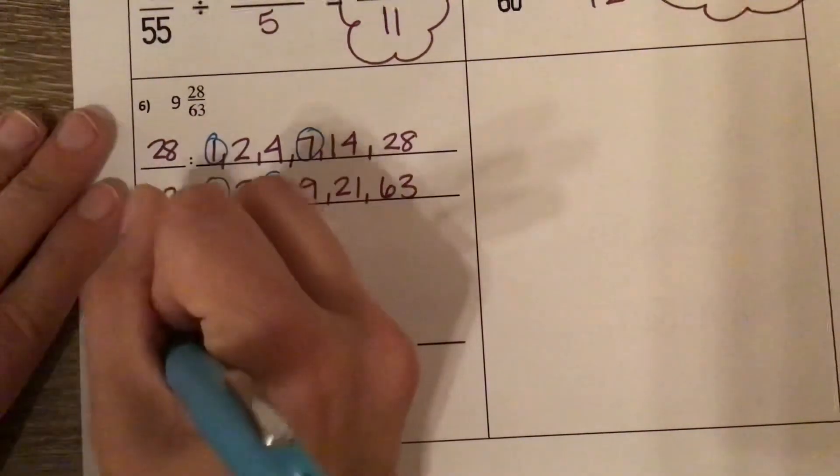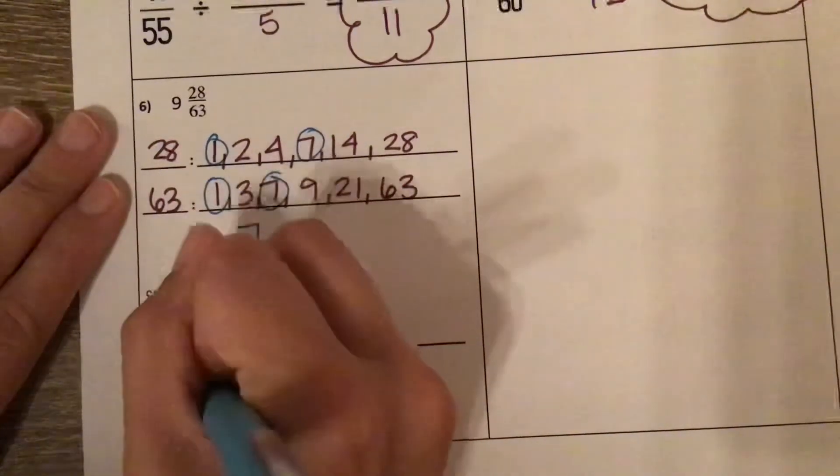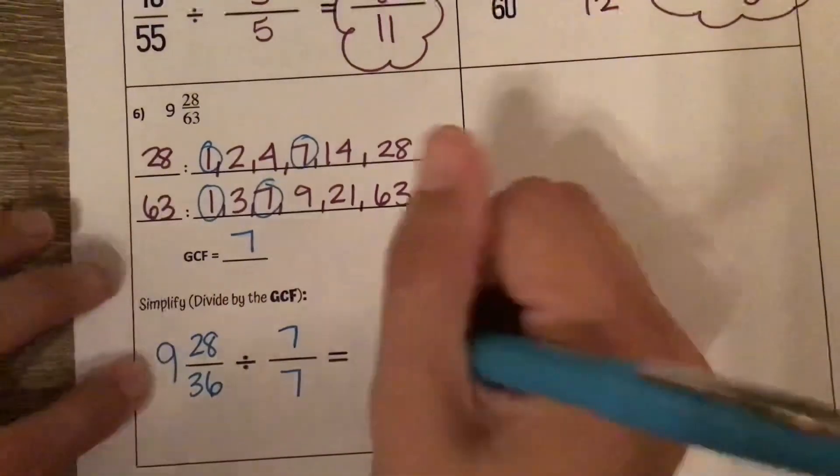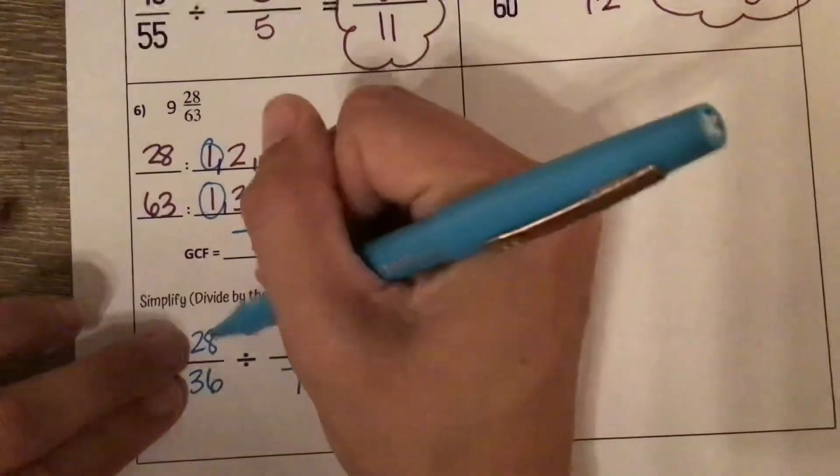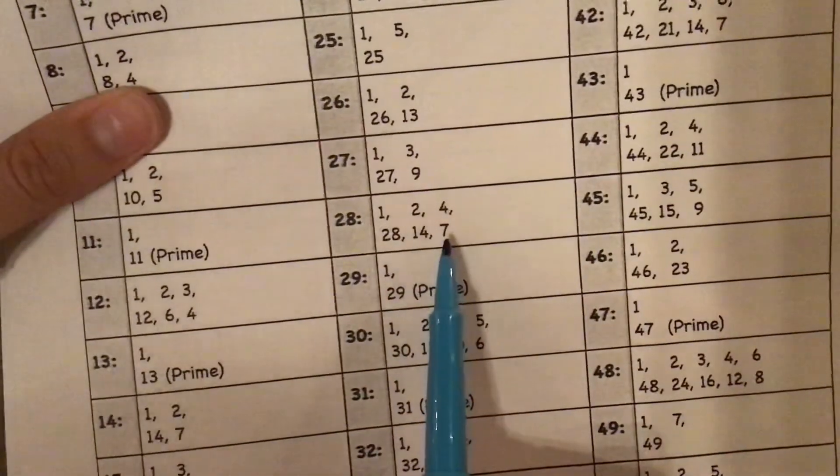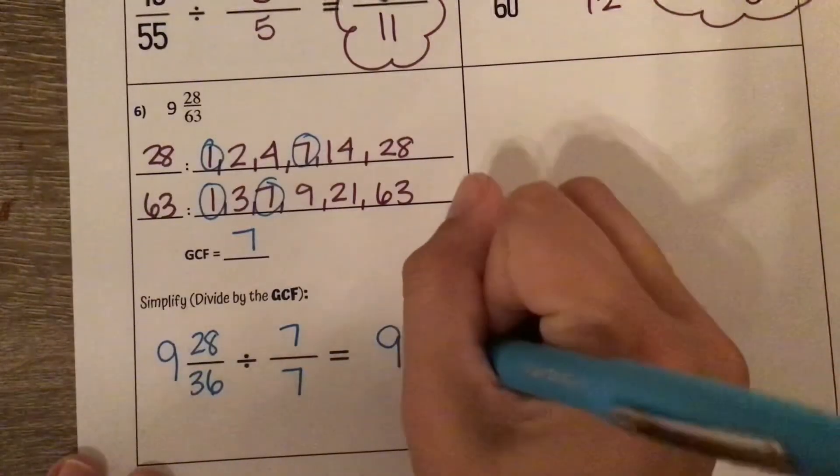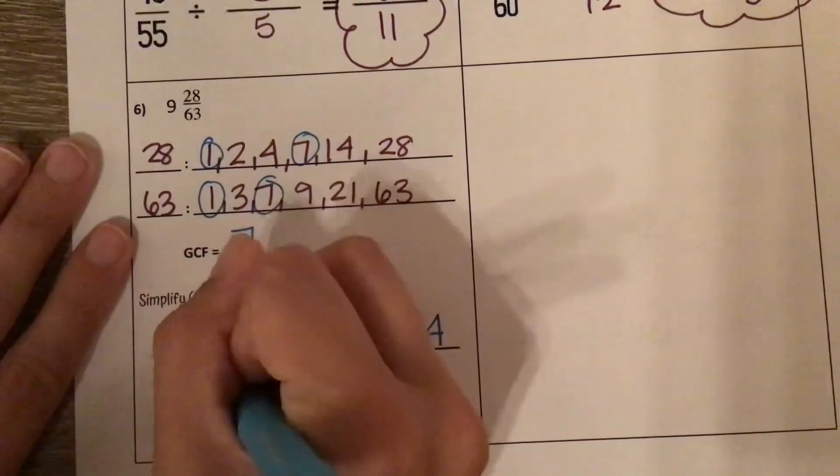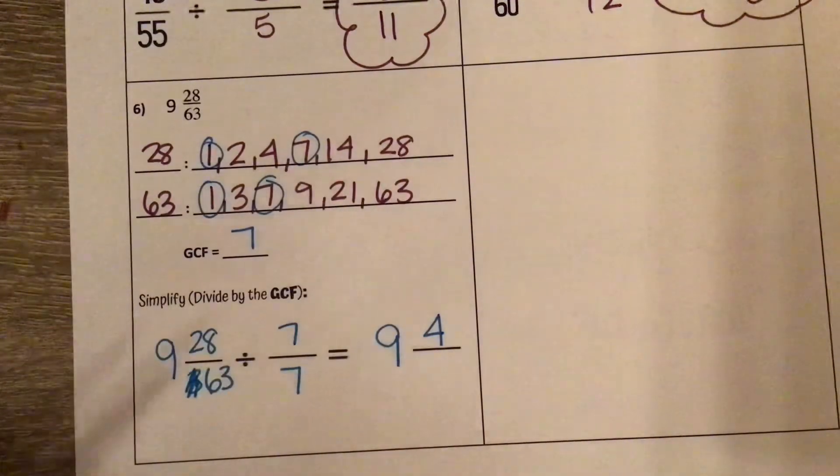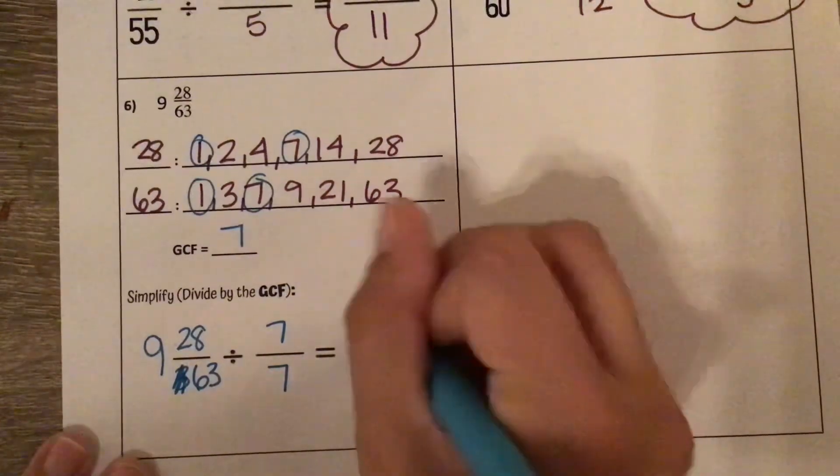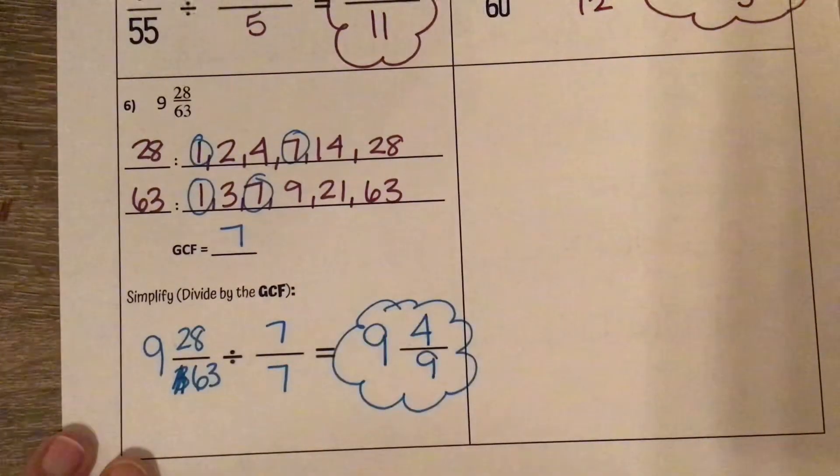I'm going to write the original mixed number, which was 9 and 28 over 63. We are dividing by our GCF of 7. Our whole number stays the same. The fraction we are dividing. 28 divided by 7. I'm going to look at my factor chart. 28, where there's 7, it matches up with 4. So 28 divided by 7 is 4. 63 divided by 7, find 7 under 63, it matches up with 9. So 63 divided by 7 is 9. So our simplified fraction is 9 and 4 ninths.